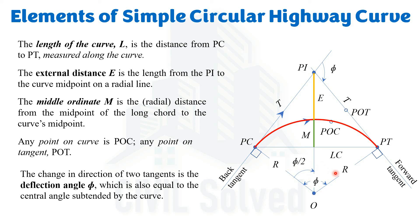This is all from this video, where we discussed the different elements related to the simple circular highway curve. In the next videos I'm going to discuss how to calculate these distances — tangent length, length of curve, external ordinate, middle ordinate, and long chord — with the help of radius and deflection angle. Thank you for watching.